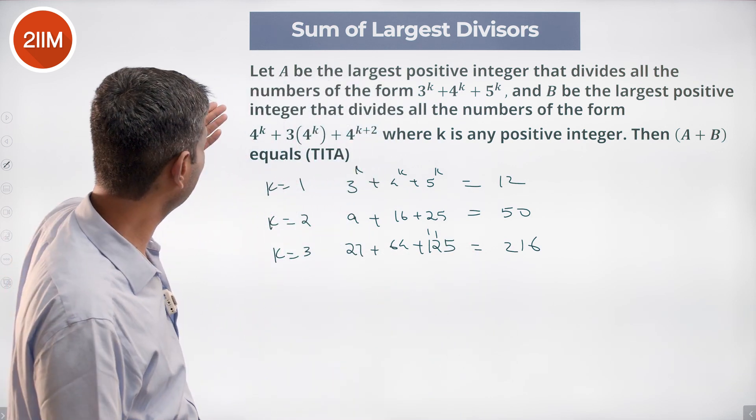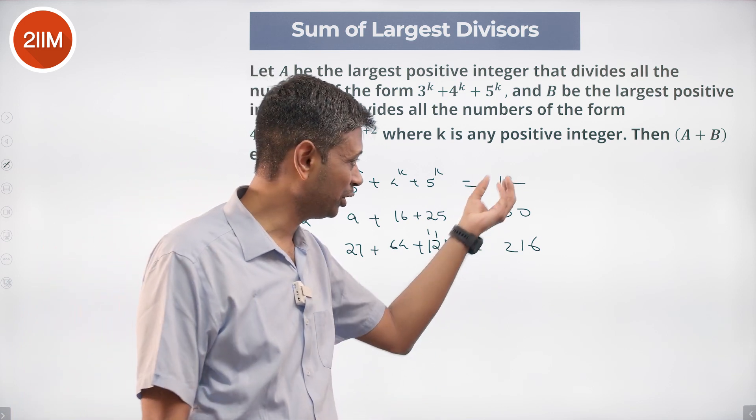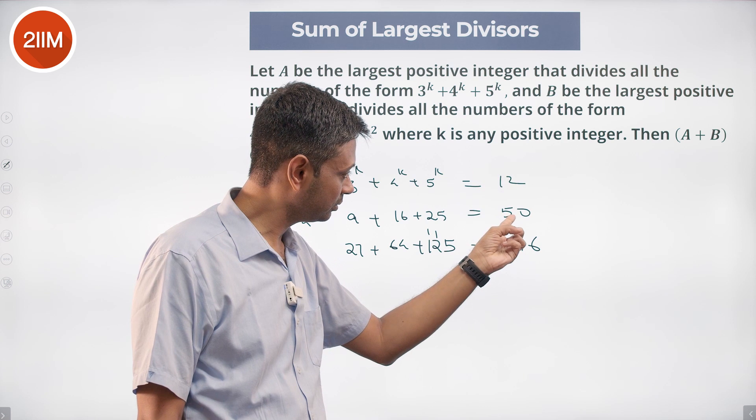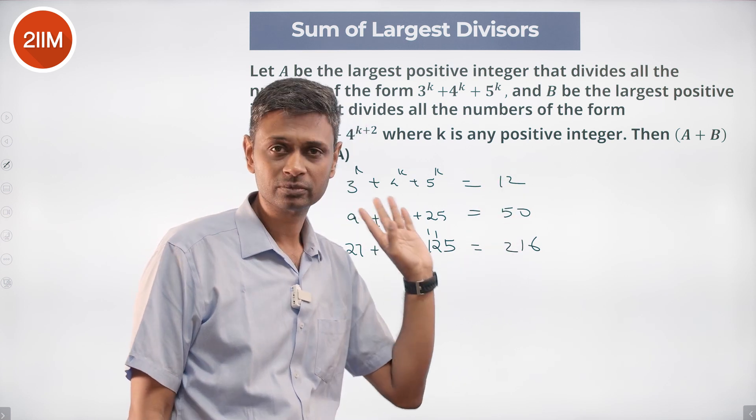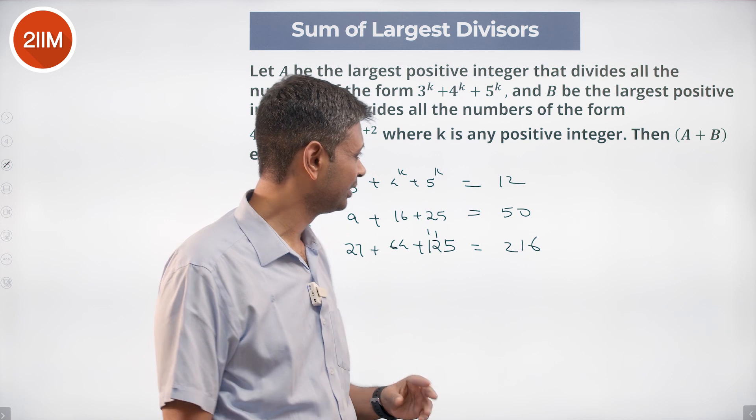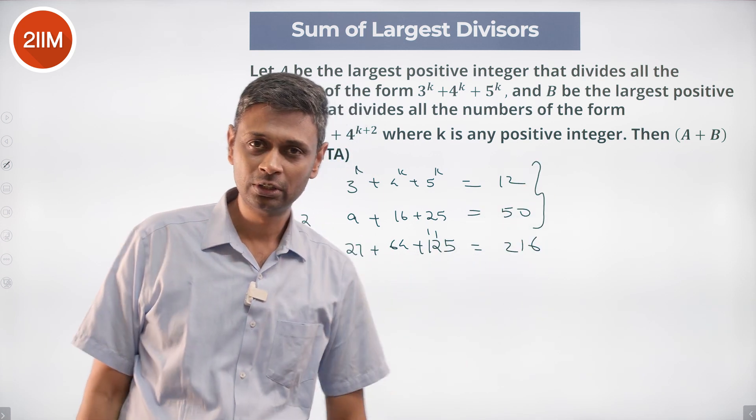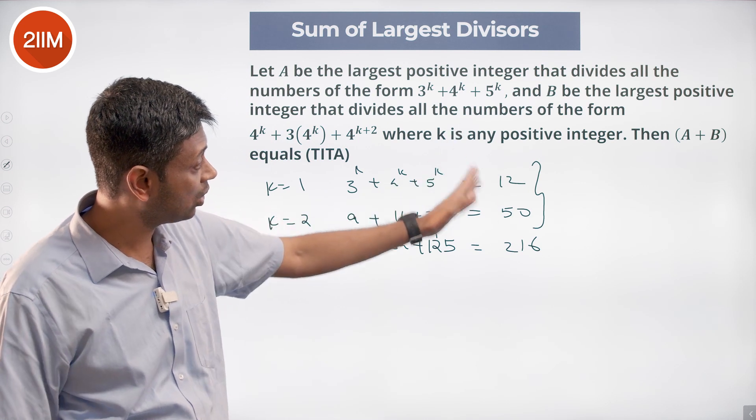So the A should be less than or equal to 12, this number is only 12. 12 does not divide this, even 6 does not divide, this does not have a 3, it is not about 4 either. Between these two, the highest common factor is 2. So 2 can divide all of these numbers.